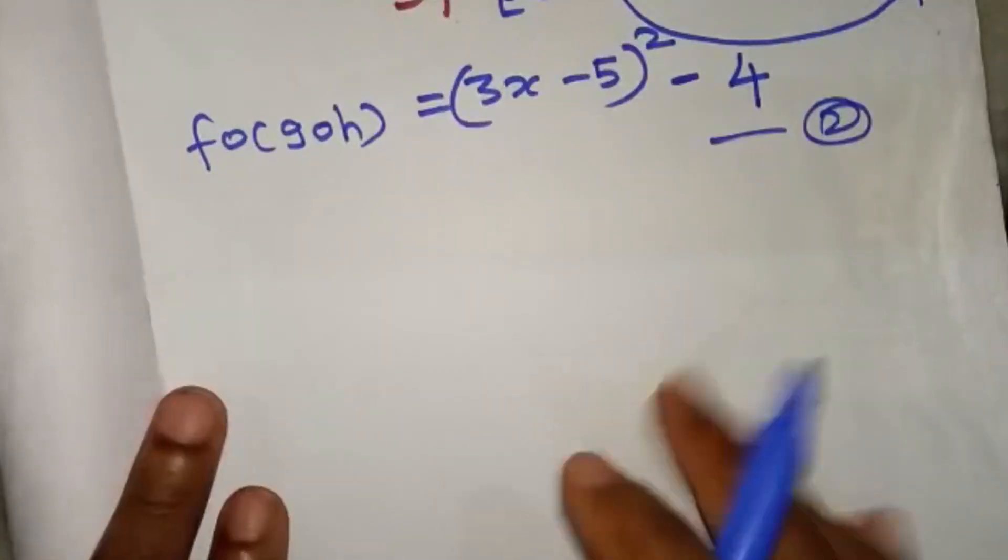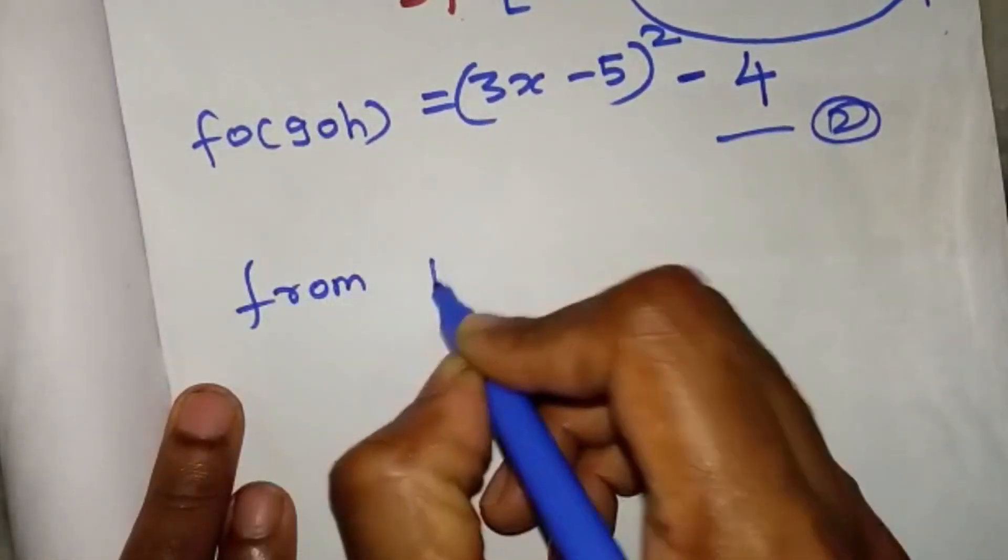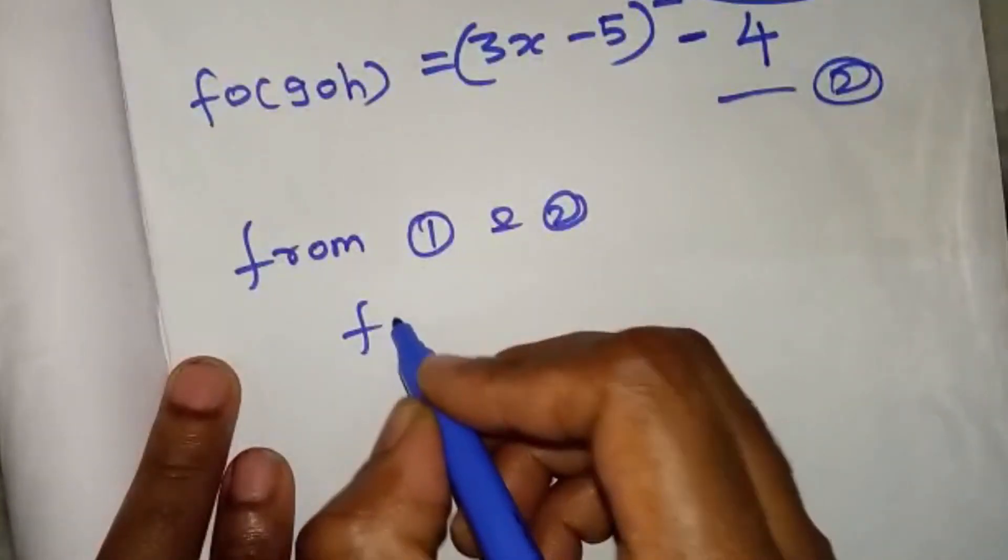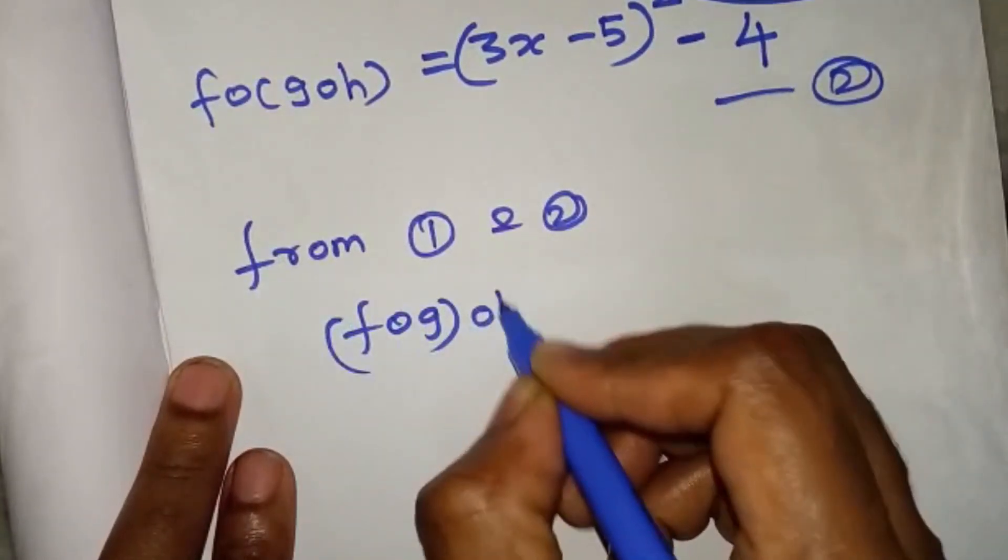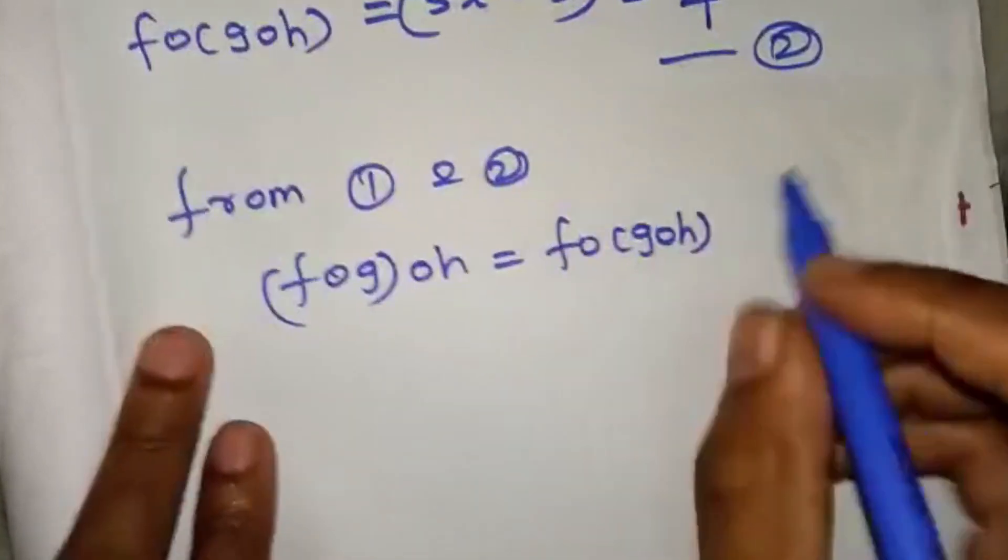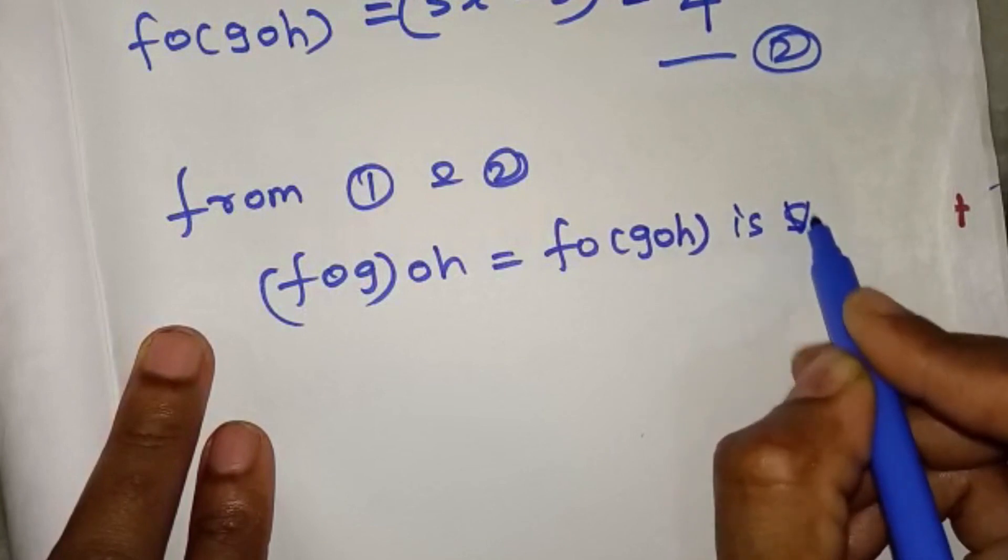It is equation 2. It is equation 1. Equation 2 equal. From 1 and 2, f of g of h equal to f of g of h is verified.